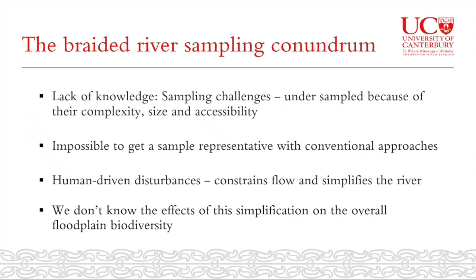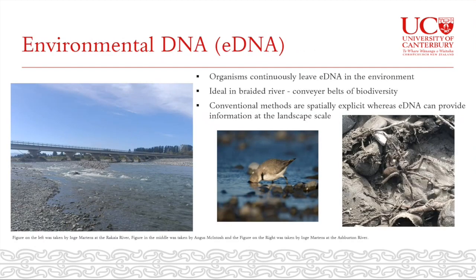The lack of knowledge is usually due to sampling challenges. These rivers are complex, really big, and hard to access, making it impossible to get a representative sample with conventional approaches. This has become increasingly important as human-driven disturbances like flood protection, agricultural encroachment, and weeds constrain the flow and stop channels from migrating, simplifying the river overall. We also don't fully know the effects of this simplification on overall braided river biodiversity.